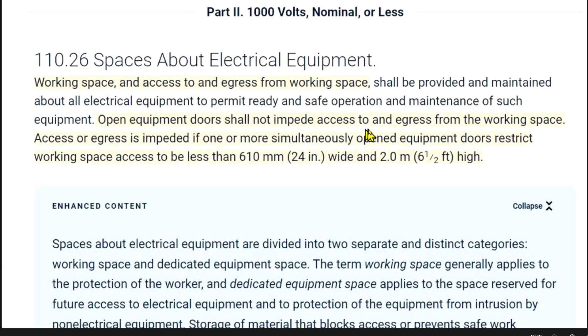Open equipment doors shall not impede access to and egress from the working space. Access or egress is impeded if one or more simultaneously open equipment doors restrict working space access to be less than 610 millimeters, that's 24 inches wide, and 2 meters, at 6 and a half feet high.